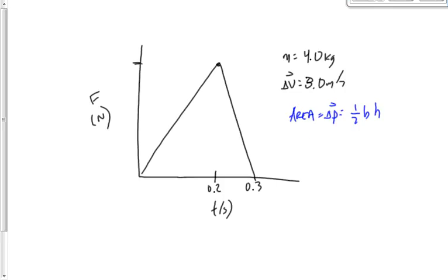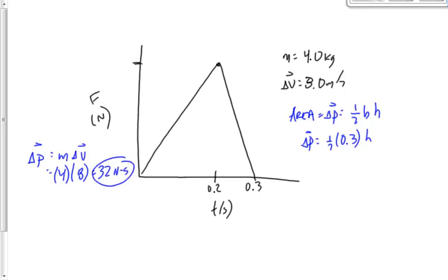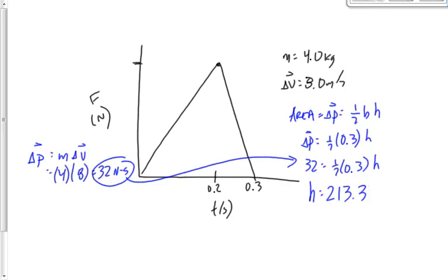We don't know delta P or the height directly. But since we know M and delta V, let's find the impulse using M times delta V: 4 times 8 gives 32 newton seconds. Now set that equal to the area: 32 equals one-half of 0.3 times the height. Multiply both sides by 2 and divide by 0.3: the height — the maximum force — is 213.3 newtons.